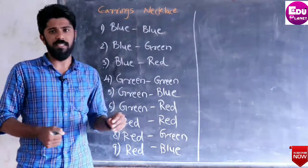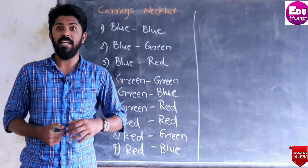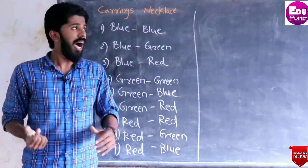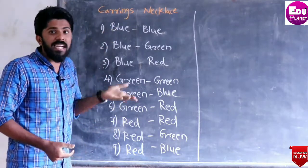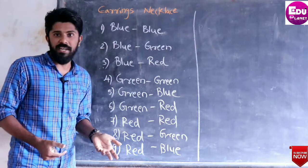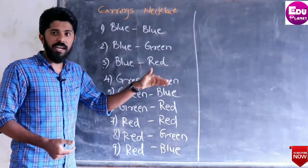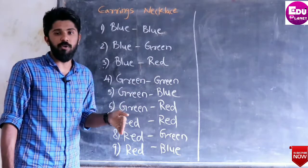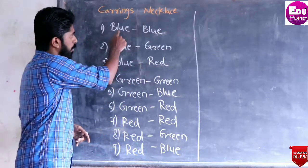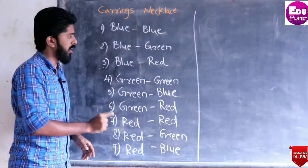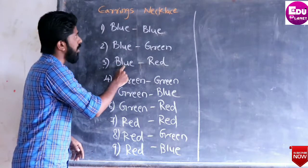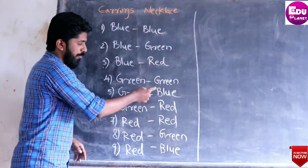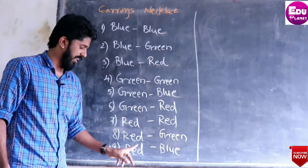Now, for example, the Pais and Jordi is called Pais. At that same color with the Pais, we will talk about Pais and Jordi's color. This color is blue, green, and red. You have two color necklaces and earrings: blue earring, blue necklace, blue earring, red necklace, green earring, blue, red, red, green, red, blue.